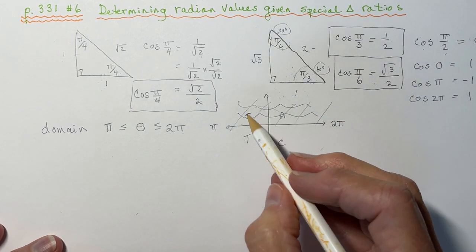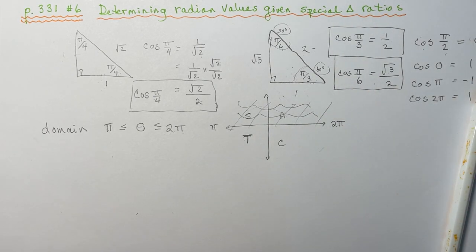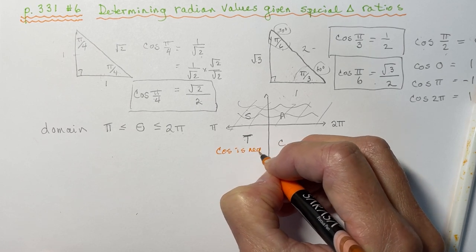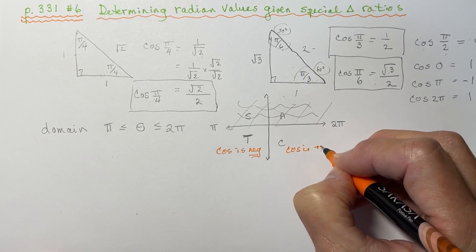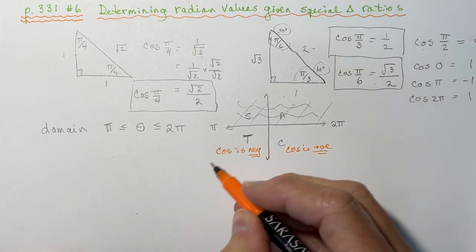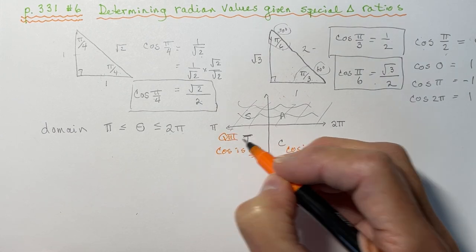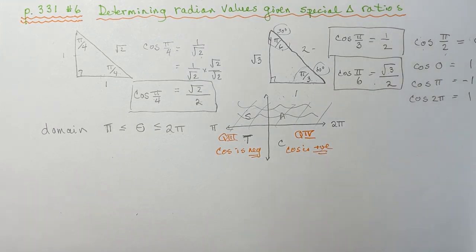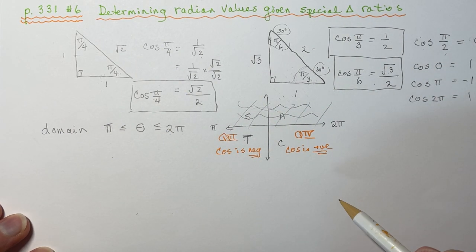So when I'm in this quadrant, this is where cos is negative. It's negative in this quadrant. And in this quadrant, cos is positive. So my questions, I'm either going to be in this quadrant, which is quadrant 3, or I'm going to be in this quadrant, quadrant 4. So let's take a look at the questions now that we've prepared ourselves, knowing where all the ratios are and which quadrant we need to be in.